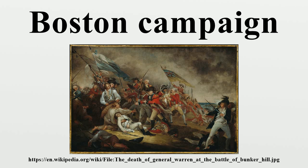In the aftermath of the failed Concord expedition, the thousands of militiamen that had converged on Boston remained. Over the next few days, more arrived from further afield, including companies from New Hampshire, Connecticut, and Rhode Island. Under the command of Artemas Ward, they surrounded the city, blocking its land approaches and putting the occupied city under siege. The British regulars fortified the high points in the city.